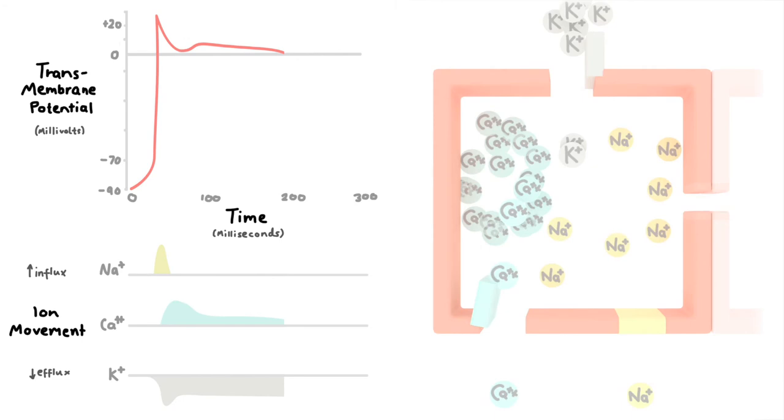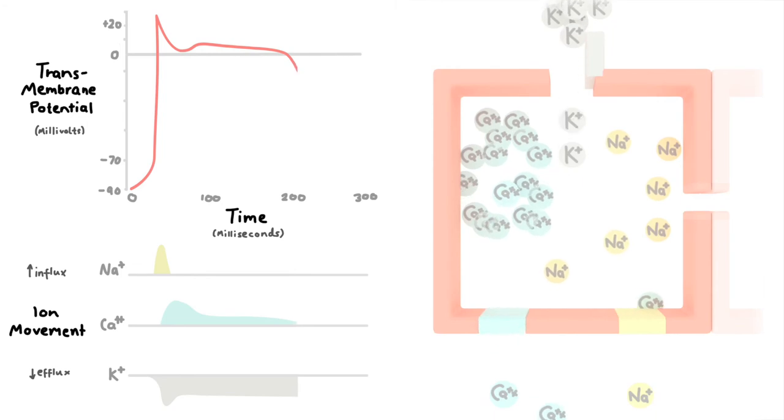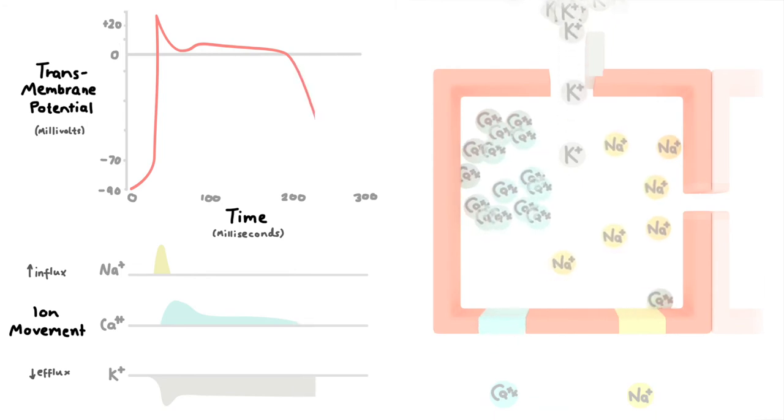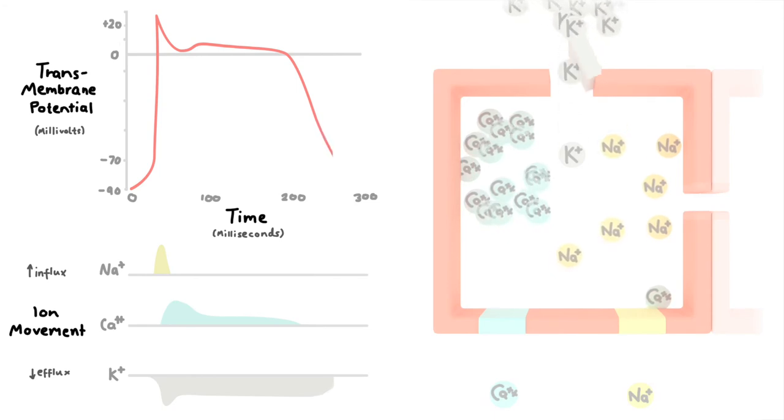The calcium channels stay open for a little while, but as with the sodium channels, they stick to a time limit. After a short while, they begin to close. This leaves only the potassium channels open, which allows potassium to achieve its goal of repolarising the cell. Back we go, down to the cells resting TMP.